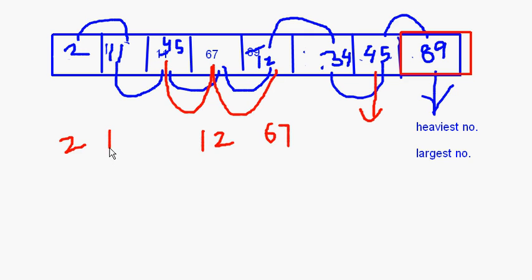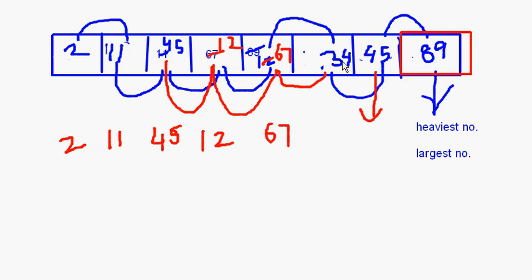So now we have 2, 11, 45, 12, and 67. Then 67 is compared with 34: this becomes 67 and this becomes 12. So 67 is compared with 34 again — this 67 becomes 34 and this becomes 67.